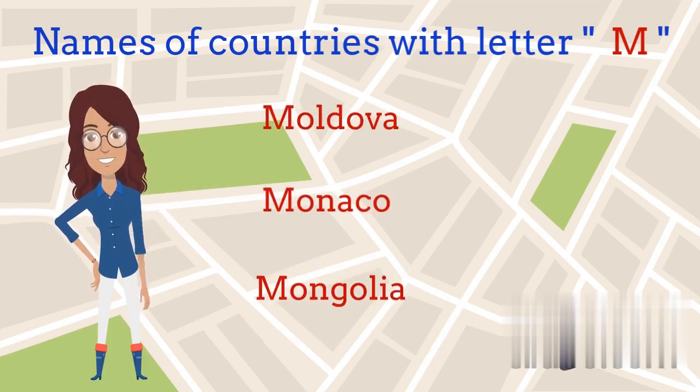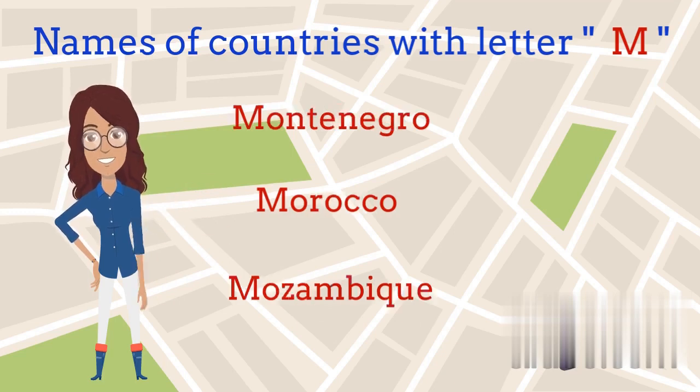Names of countries that start with letter M: Monaco, Mongolia, Montenegro, Morocco, Mozambique.